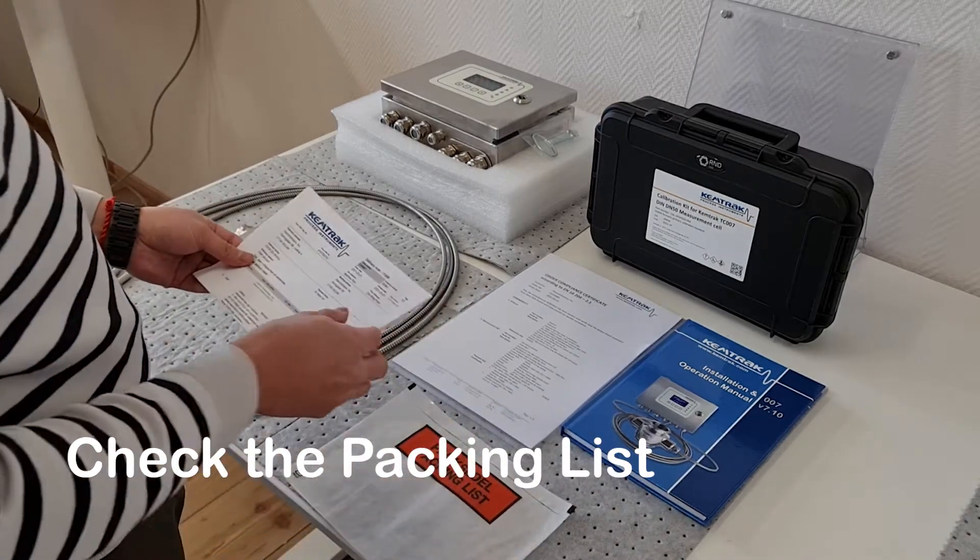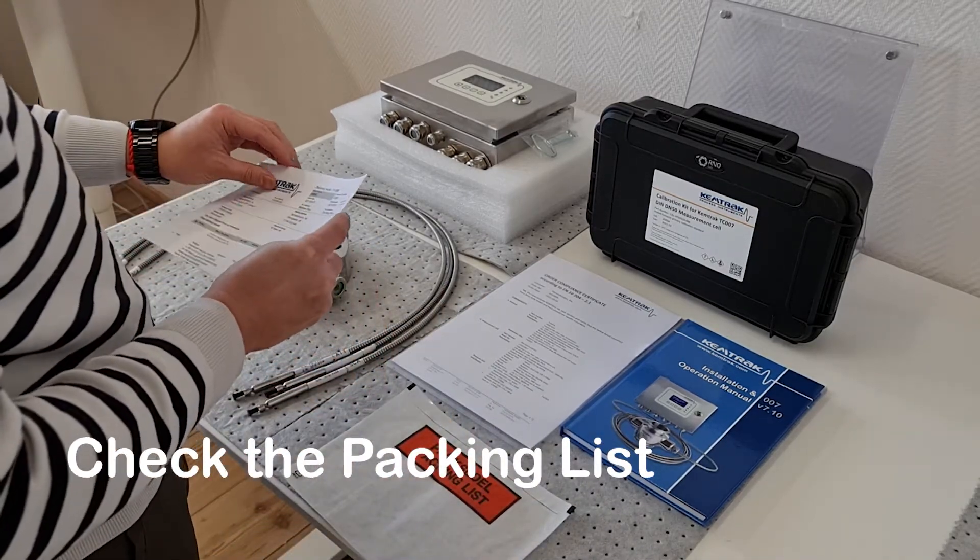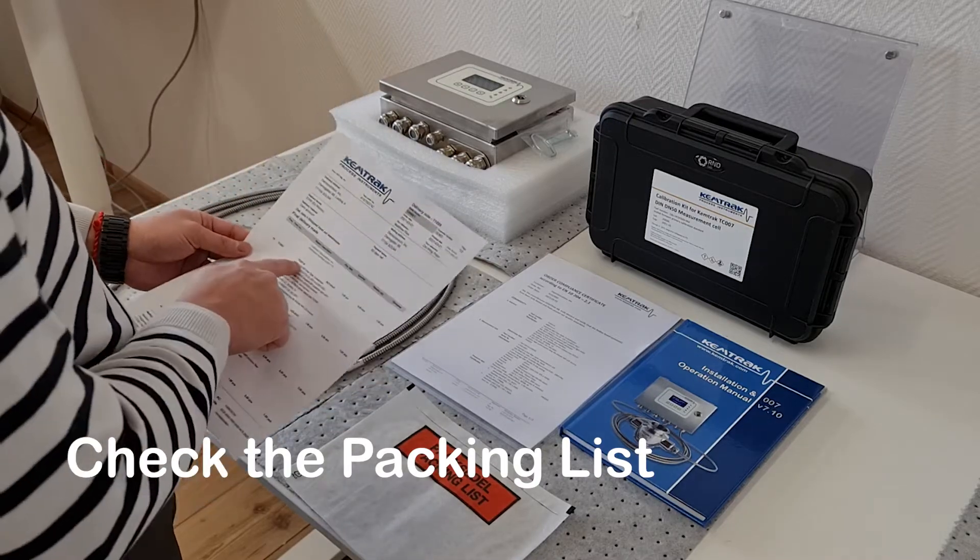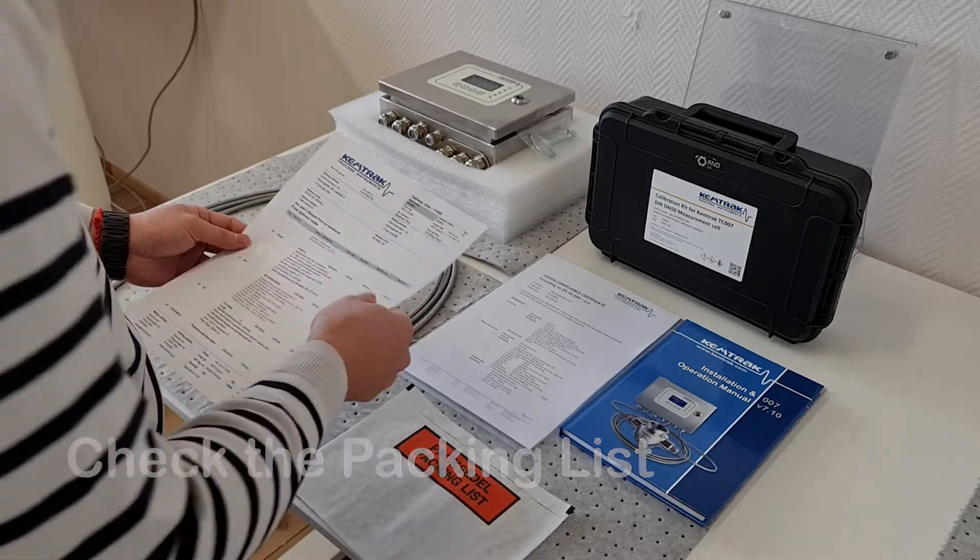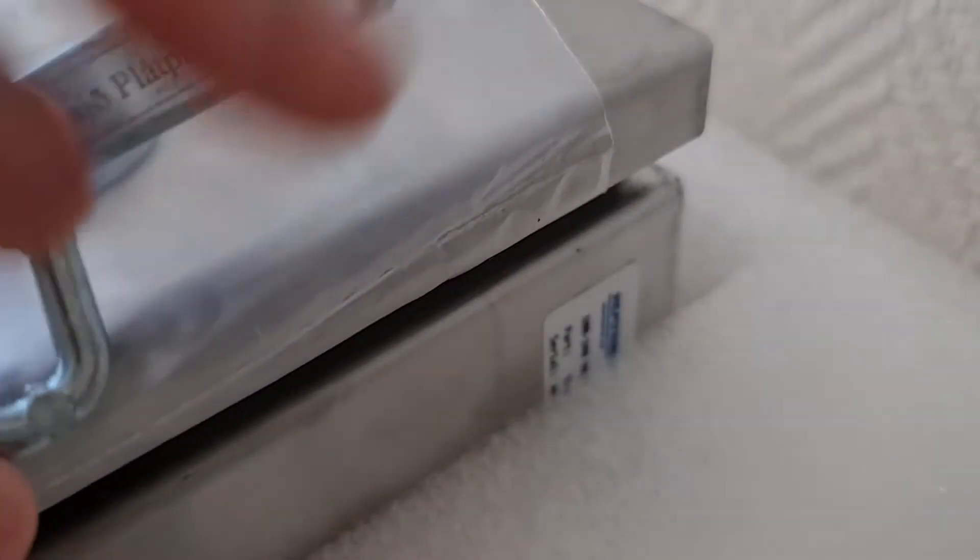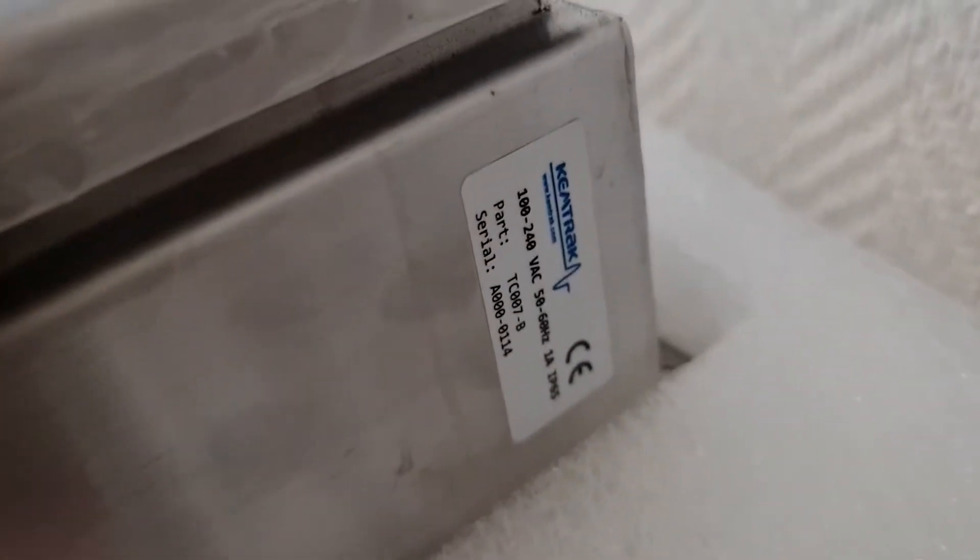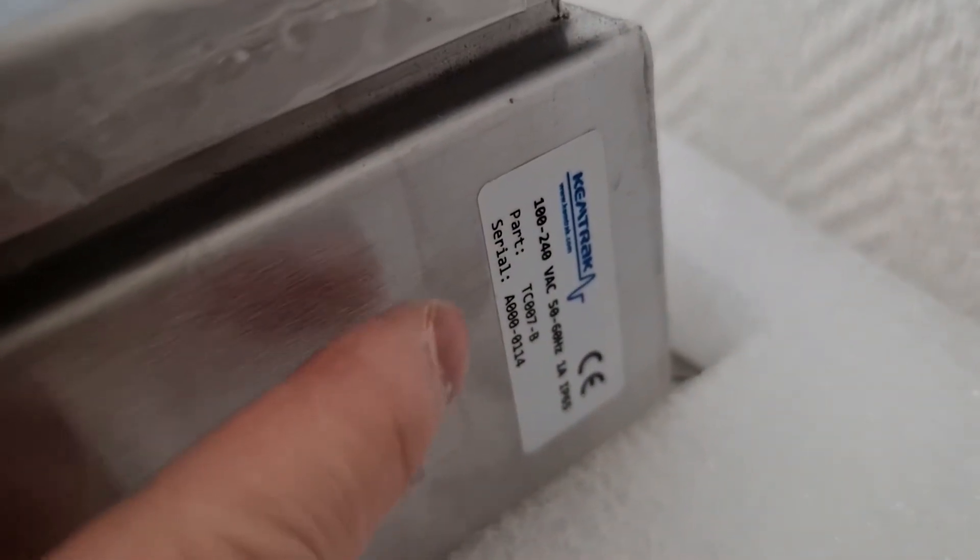Start by confirming the items received match the items listed on the packing list. The first item to confirm is the analyzer. The part number of the analyzer is located on the side of the enclosure.